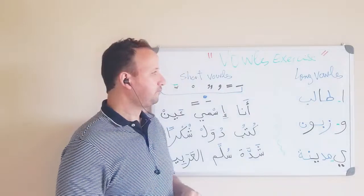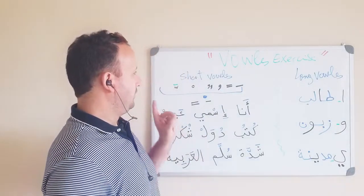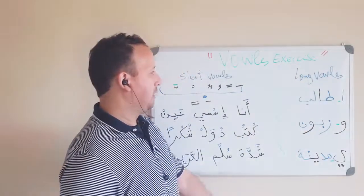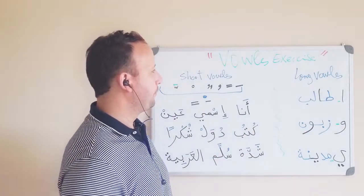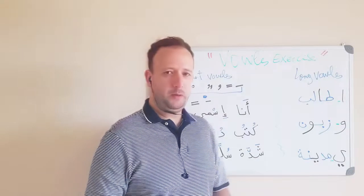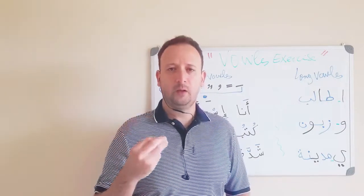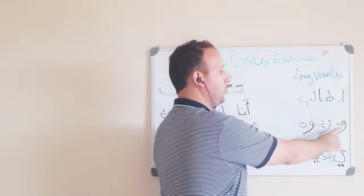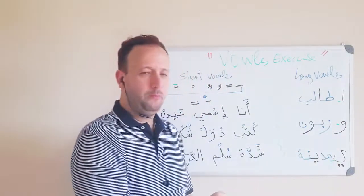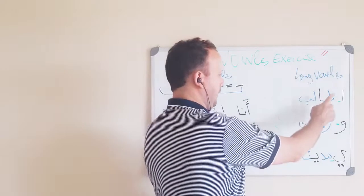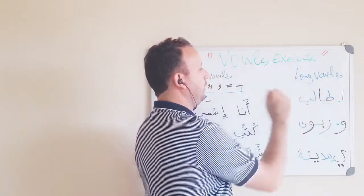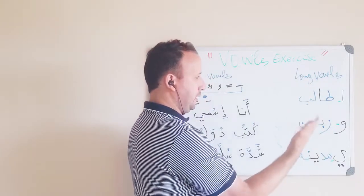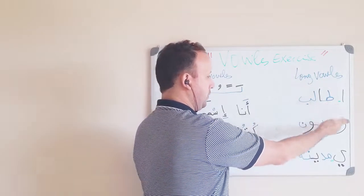Of course, we are going to start talking about the long vowels, right here. So, in Arabic, we have three long vowels: alif, waw, and ya. What is alif, waw, and ya? It makes the letters before it pronounced long.